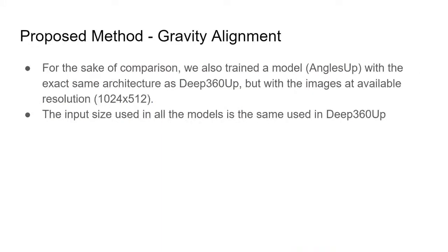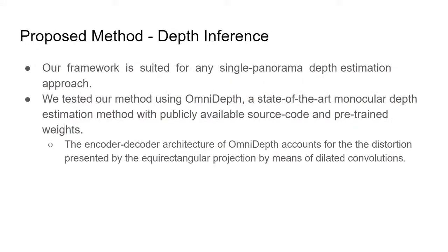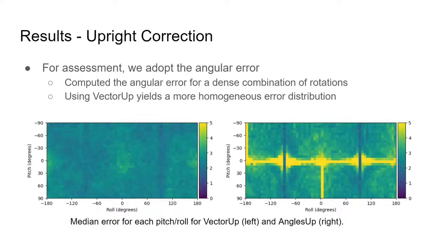It is known that rotating low-resolution images generates artifacts that might compromise the resulting model. For the sake of comparison, we trained a model called AnglesUp with the exact same architecture as Deep360Up, but with the images at the available resolution. The images are rotated at this resolution and then resized to the input size. Our framework is suited for any single panorama depth estimation method. In this work, we tested our method using OmniDef. To evaluate our upright correction method, we adopt the angular error. Using VectorUp yields a more homogeneous error distribution.